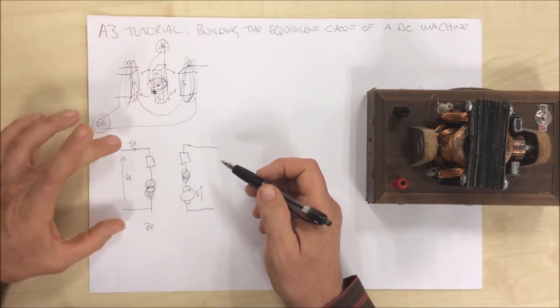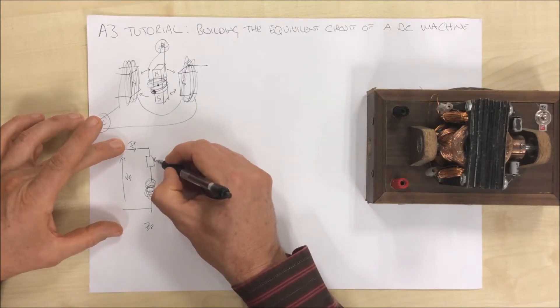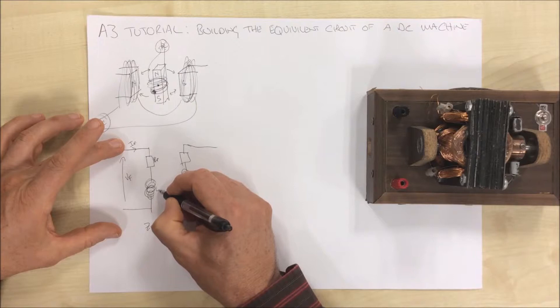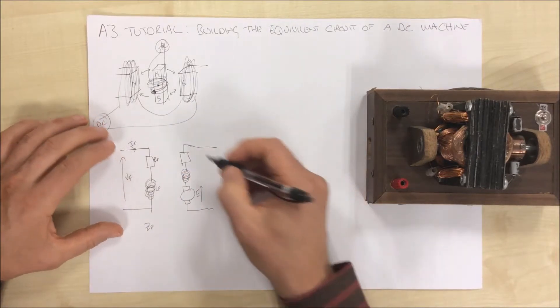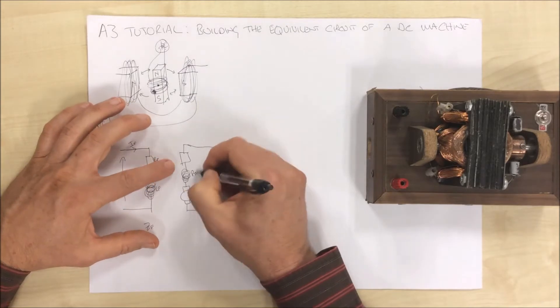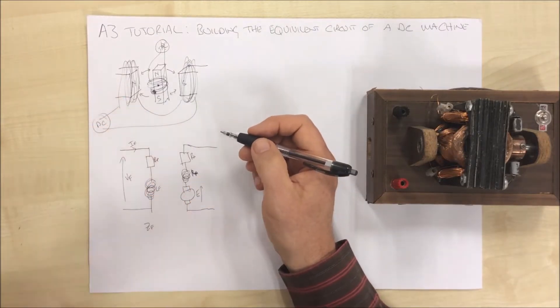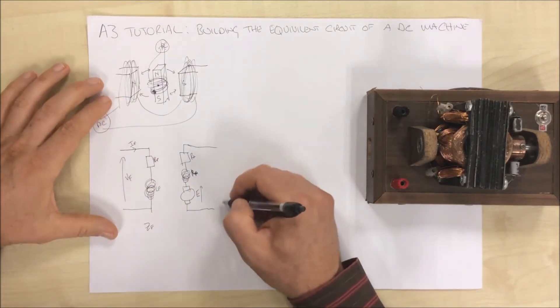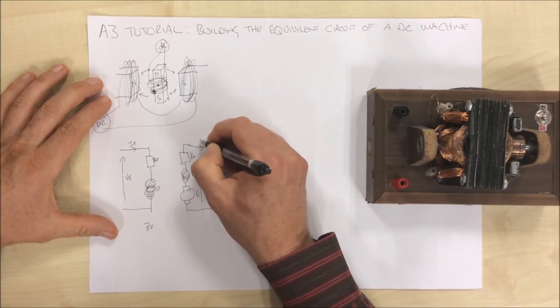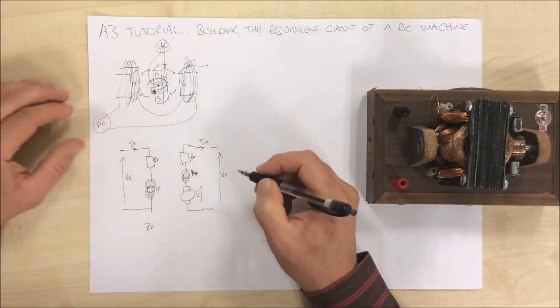We just recap. Over here is our field. Our field resistance, RF. Our field inductance, LF. Our armature. We've got an armature resistance and we've got an armature inductance, and the back EMF.